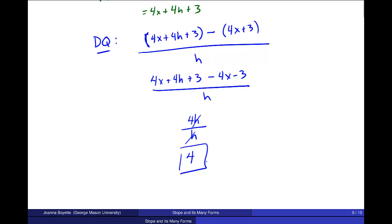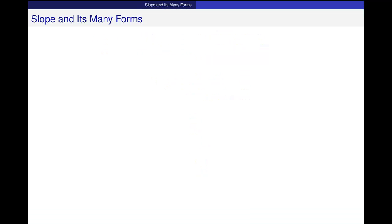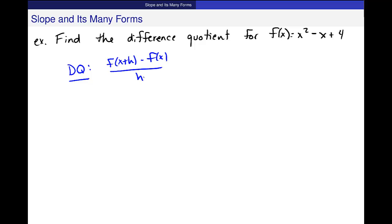Let's do one more difference quotient that's a little bit more complicated. Or a little bit messier, maybe. Example. Find the difference quotient. Again, this is just the slope when my two points are really close together. For f(x), it's equal to x squared minus x plus 4. Again, difference quotient: f(x + h) minus f(x) divided by h. So find f(x + h).